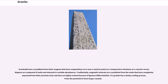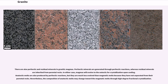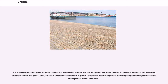If a granite has a slowly cooling process, it has the potential to form larger crystals. There are also peritectic and residual minerals in granitic magmas. Peritectic minerals are generated through peritectic reactions, whereas residual minerals are inherited from parental rocks. In either case, magmas will evolve to the eutectic for crystallization upon cooling. Anatectic melts are also produced by peritectic reactions, but they are much less evolved than magmatic melts because they have not separated from their parental rocks. The composition of anatectic melts may change toward the magmatic melts through high-degree fractional crystallization. Fractional crystallization serves to reduce a melt in iron, magnesium, titanium, calcium and sodium, and enrich the melt in potassium and silicon. Alkali feldspar rich in potassium and quartz are two of the defining constituents of granite.